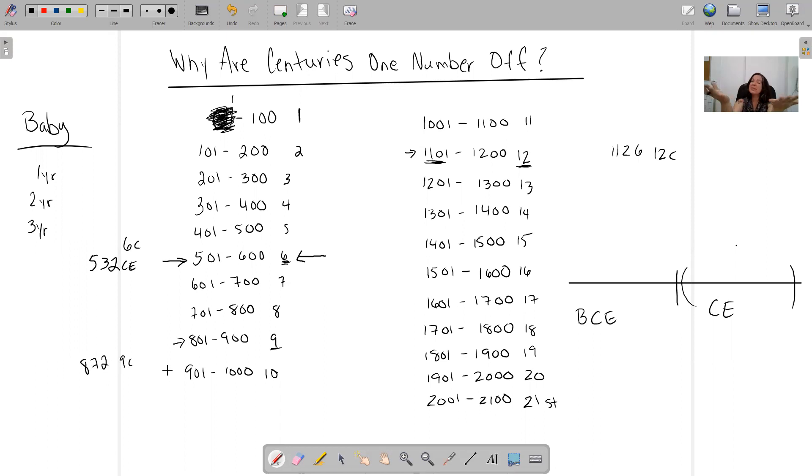Now, hopefully, you understand why the numbers always seem off. And if you have a little trouble remembering that, join the club of humanity. Everybody has a little trouble remembering that.